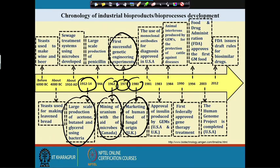In 1981, the use of monoclonal antibodies for diagnostic purposes was approved in the USA. In 1983, approval of insulin produced by recombinant technology came through, and in 1984, interferon products and other bioproducts were marketed.